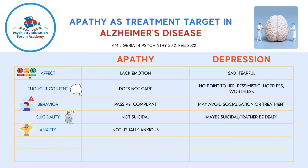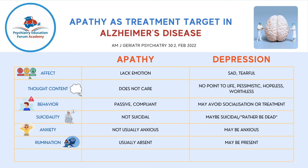Fifth is comorbid anxiety. Mostly a person with apathy is not anxious because they do not care, but a person with depression may have comorbid anxiety. Regarding rumination, this is usually absent in apathy but may be present in depression.